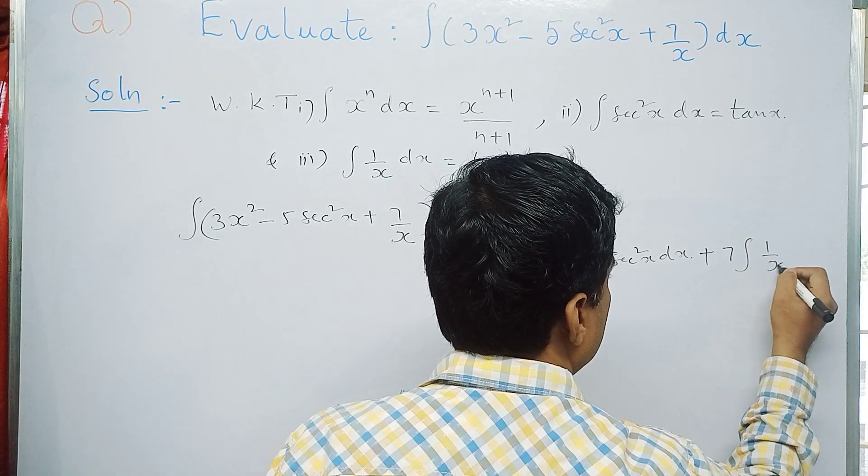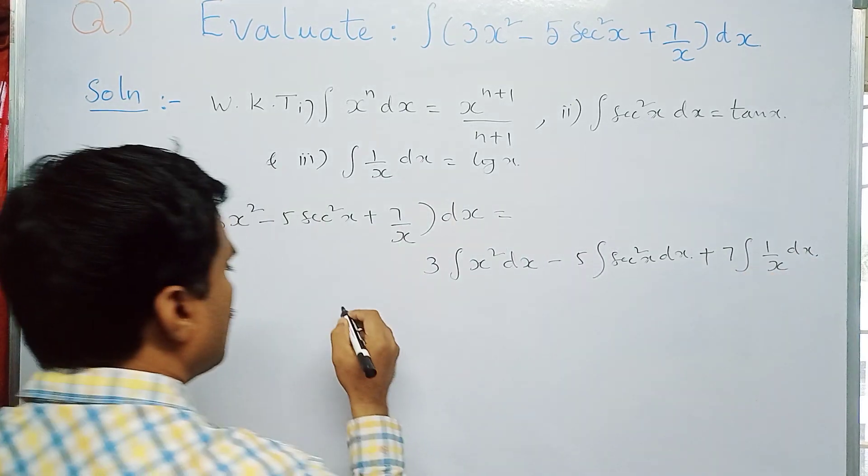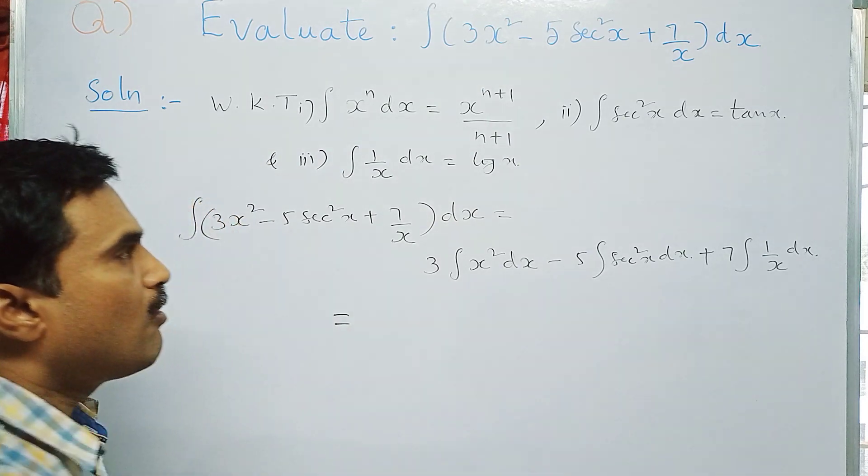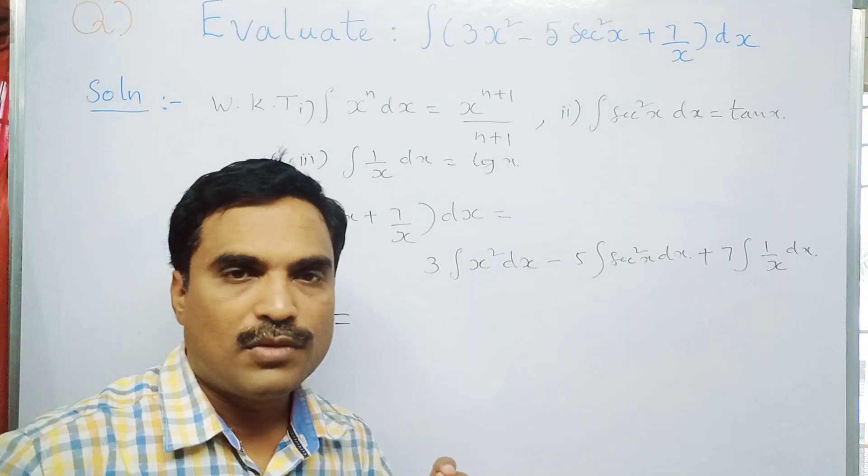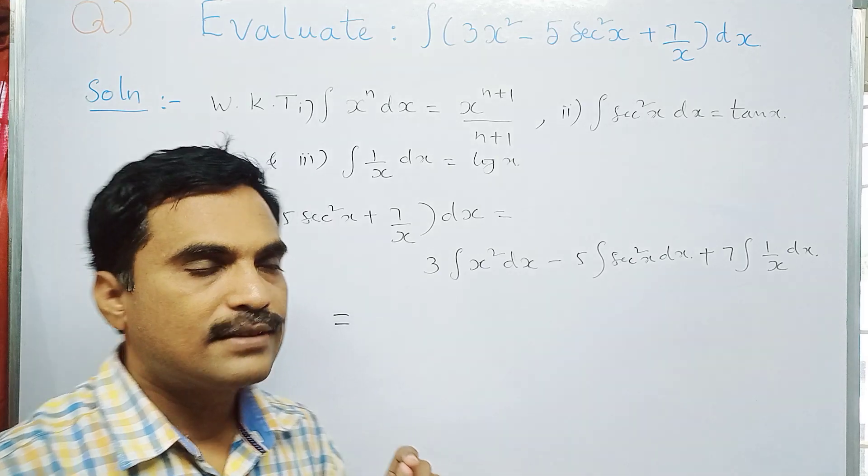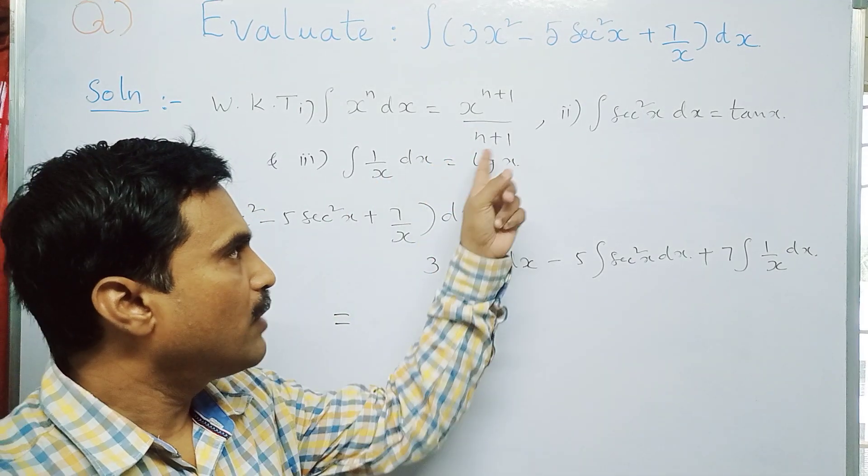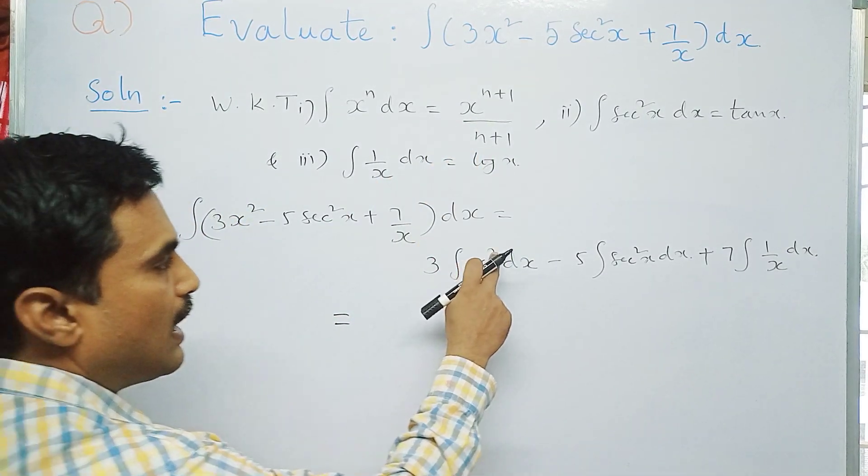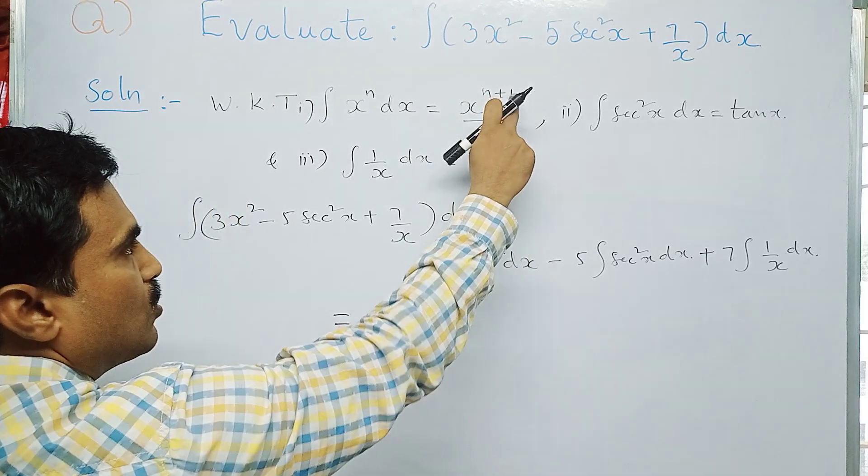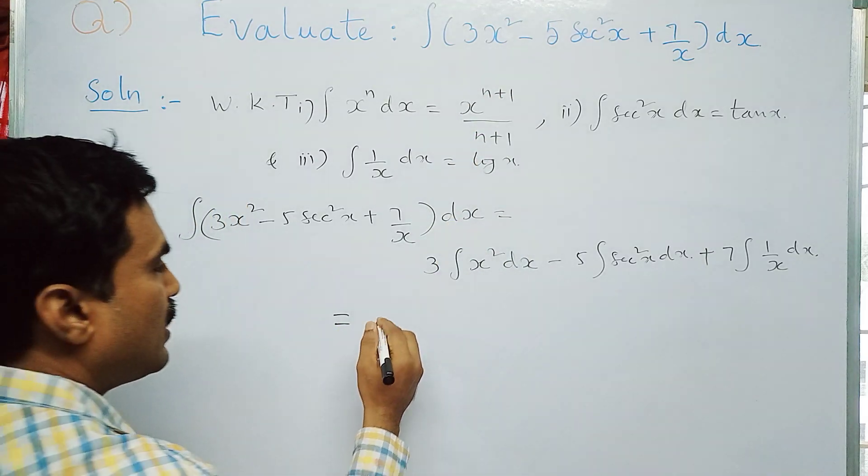This is equal to—now apply this first formula, that is integral x power n dx equal to x power n plus 1 by n plus 1. So here n value is 2. Apply here, so 2 plus 1 by 2 plus 1, that means we'll get 3 into x³ by 3.